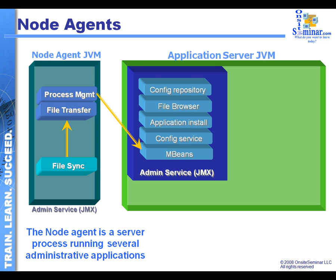A little bit later on in this course, we're going to be talking about the role that JMX actually has and how it's utilized in the application server administration process. What JMX is using is something called an MBean, or a Management Bean. The MBean is basically a small program that's going to be sitting in front of all of the configurable processes running inside the application server itself. Think of MBeans as small mini programs that we're going to be able to interact with.